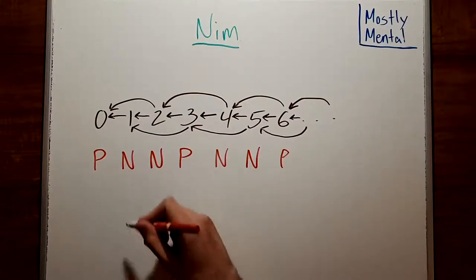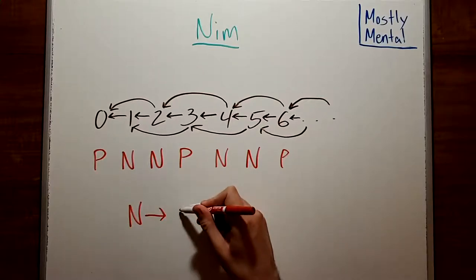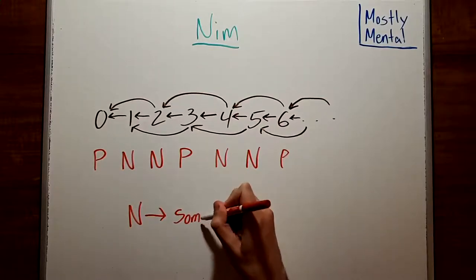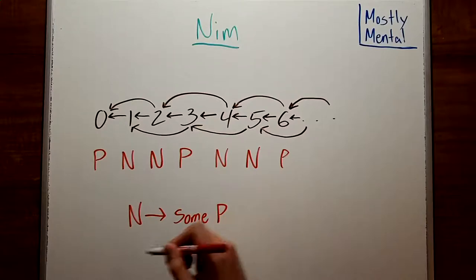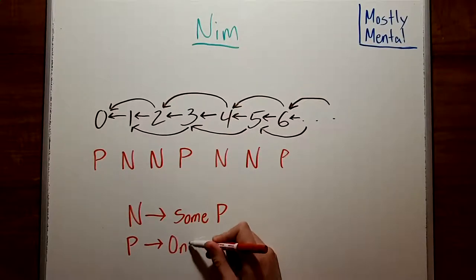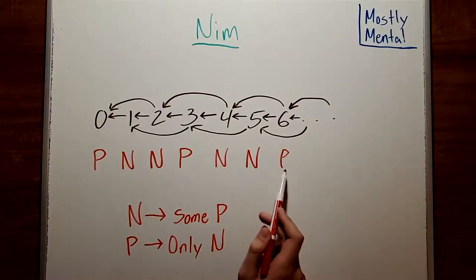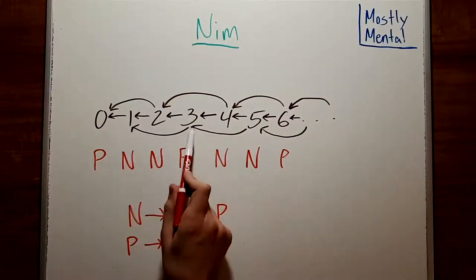More generally, an N position is one where there's some way to go to a P position. And a P position is one where there isn't. That is, every possible move ends at an N position. As an exercise, see if you can use this rule to prove that the P positions for our takeaway game are exactly the multiples of three.